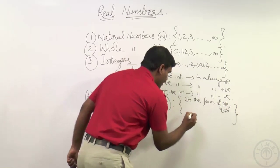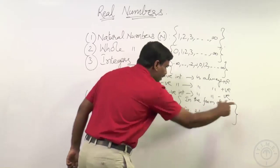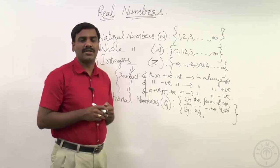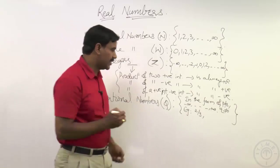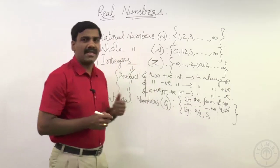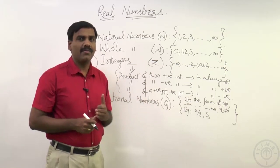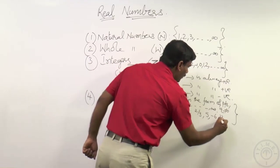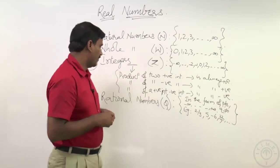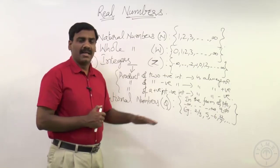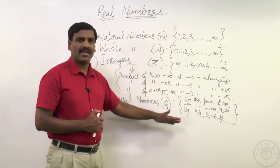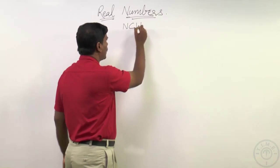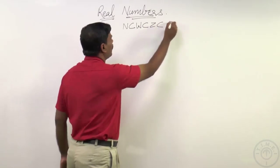Examples of rational numbers: two by three is in the form of p by q with q not equal to zero, so it is a rational number. Five can be written as five by one, which is again in the form p by q. Minus six is also in the form p by q. Twenty-two by seven is in the form p by q with q not equal to zero. So these are all examples of rational numbers. Also, integers are a subset of rational numbers: N ⊂ W ⊂ Z ⊂ Q.